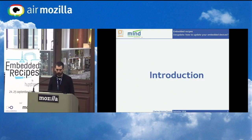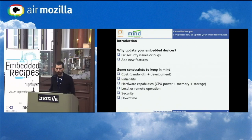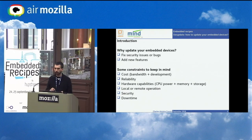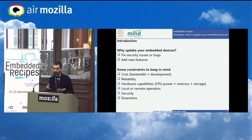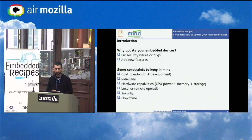Why do we have to update our embedded devices? First, to fix bugs and security issues. Because a lot of devices are used for a long time — like 10, 20, or even 30 years. During that time, a lot of security issues arise from the community, and it is not acceptable for the customer to use a product with such issues. Updating a device is also a nice way to provide new features when development allows.